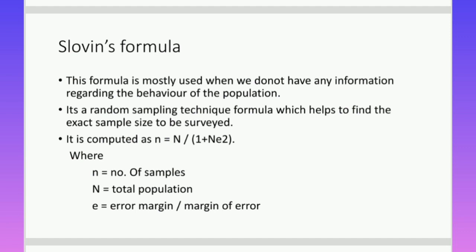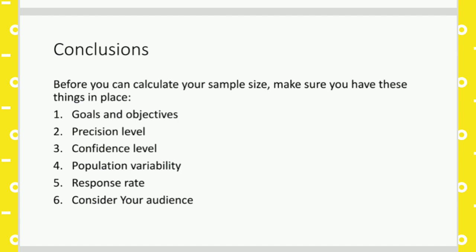Before calculating sample size from any population, certain things must be kept in mind. First, the goal and objective of the survey will decide which households are to be surveyed. Second, the precision level — that is, the amount of error you are able to absorb — must be decided beforehand. Third, the confidence level: whether you want a 95%, 99%, or 75% confidence level should be determined.